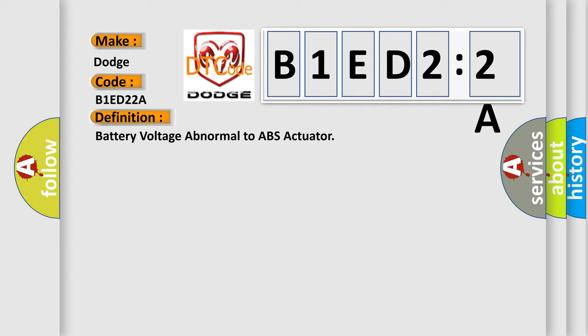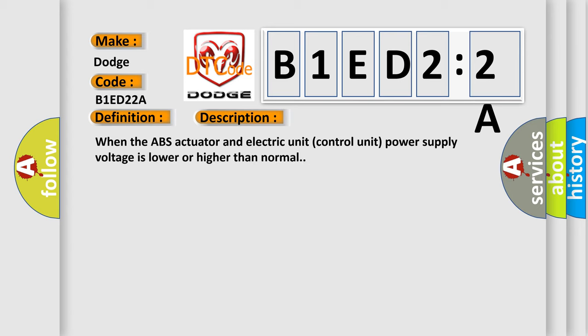And now this is a short description of this DTC code. When the ABS actuator and electric unit control unit power supply voltage is lower or higher than normal. This diagnostic error occurs most often in these cases.